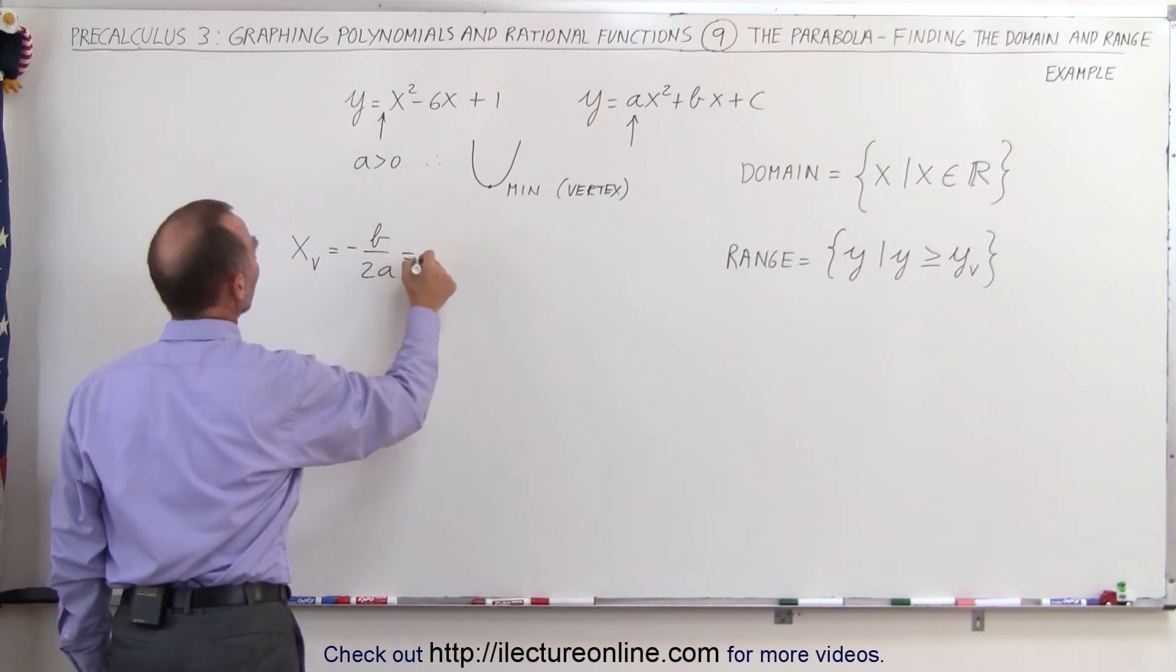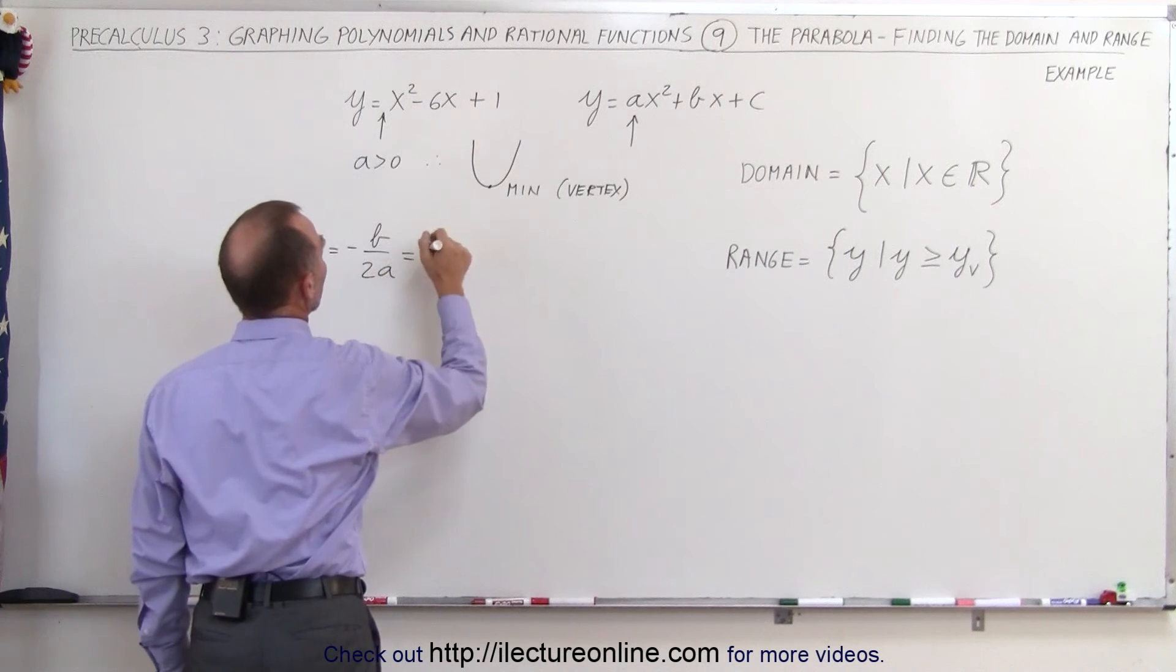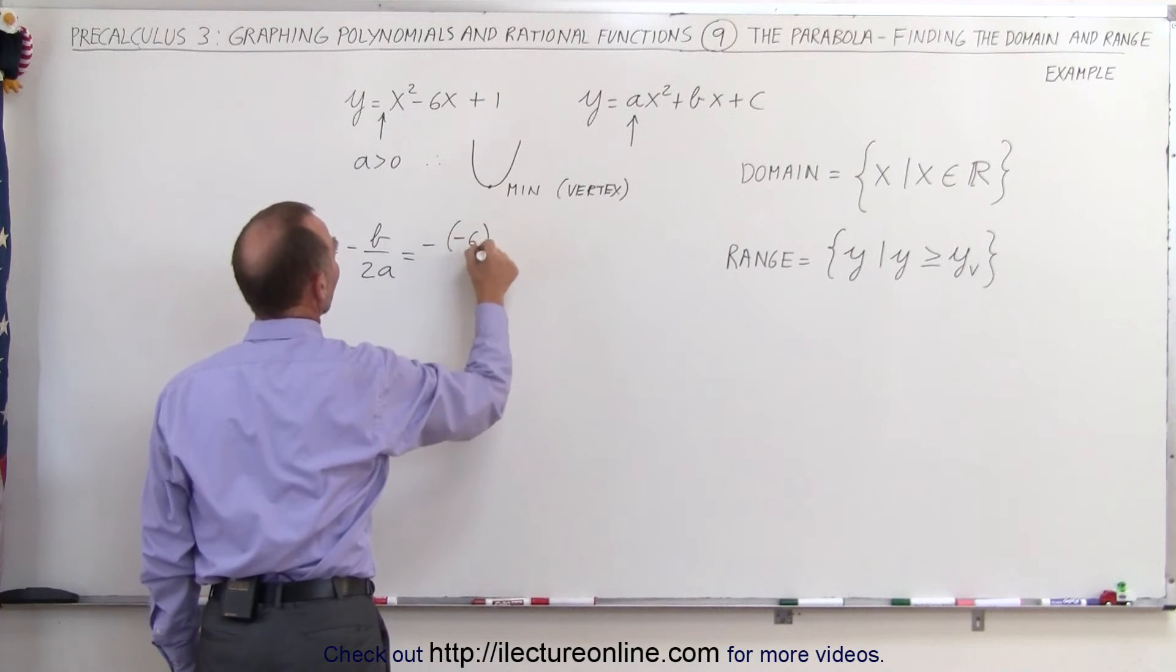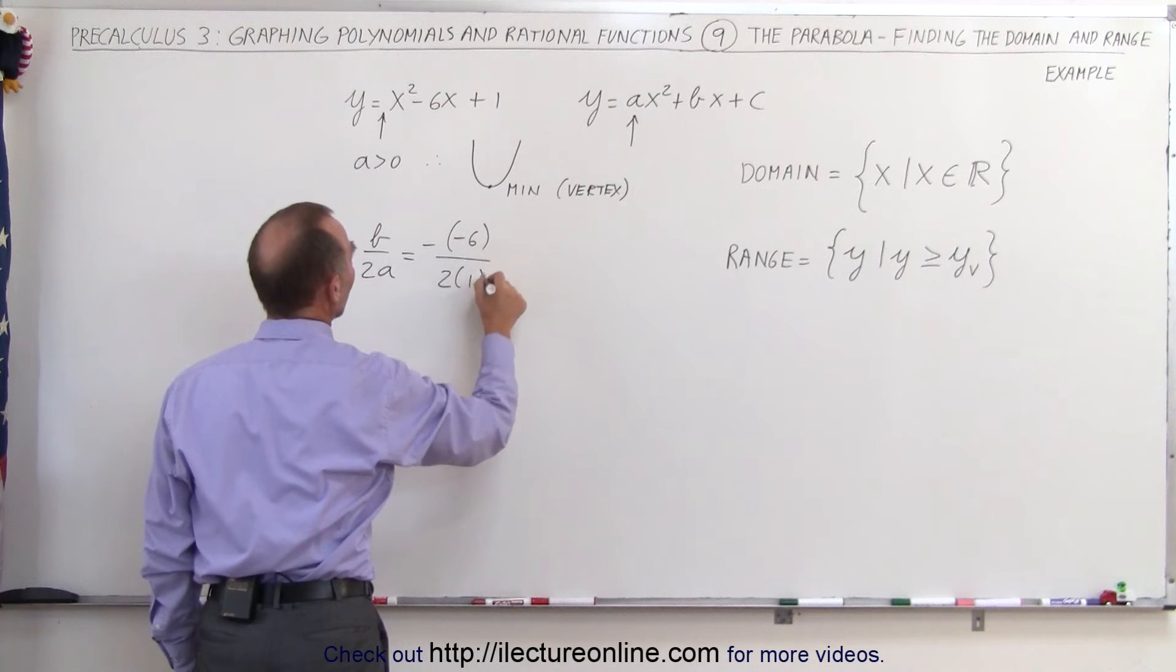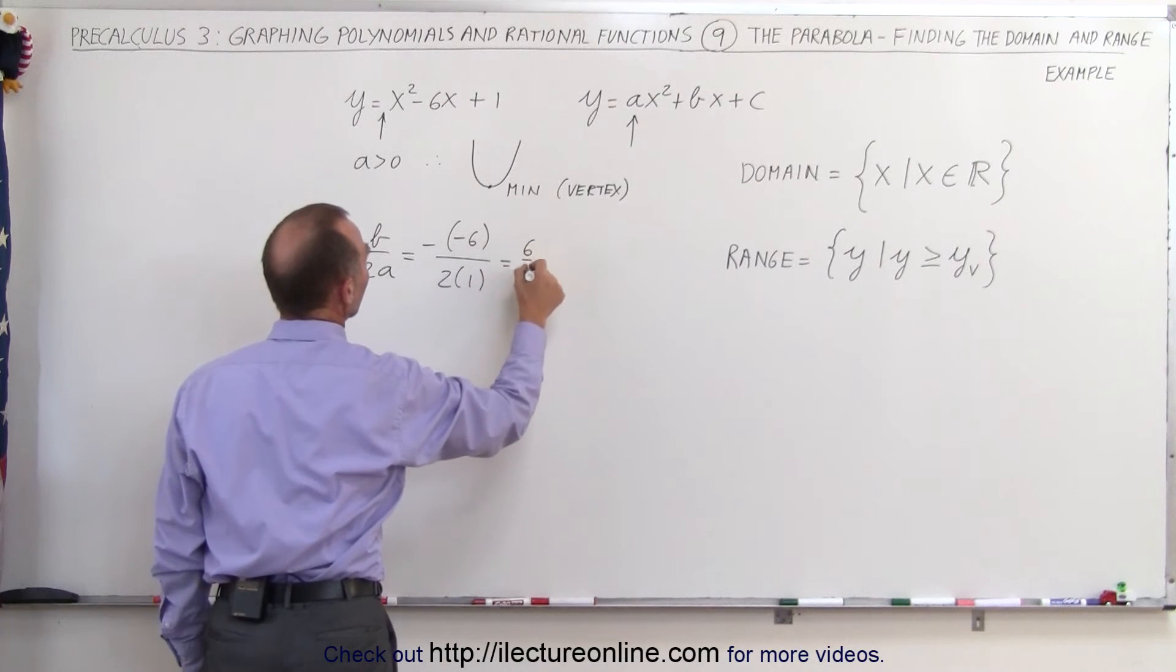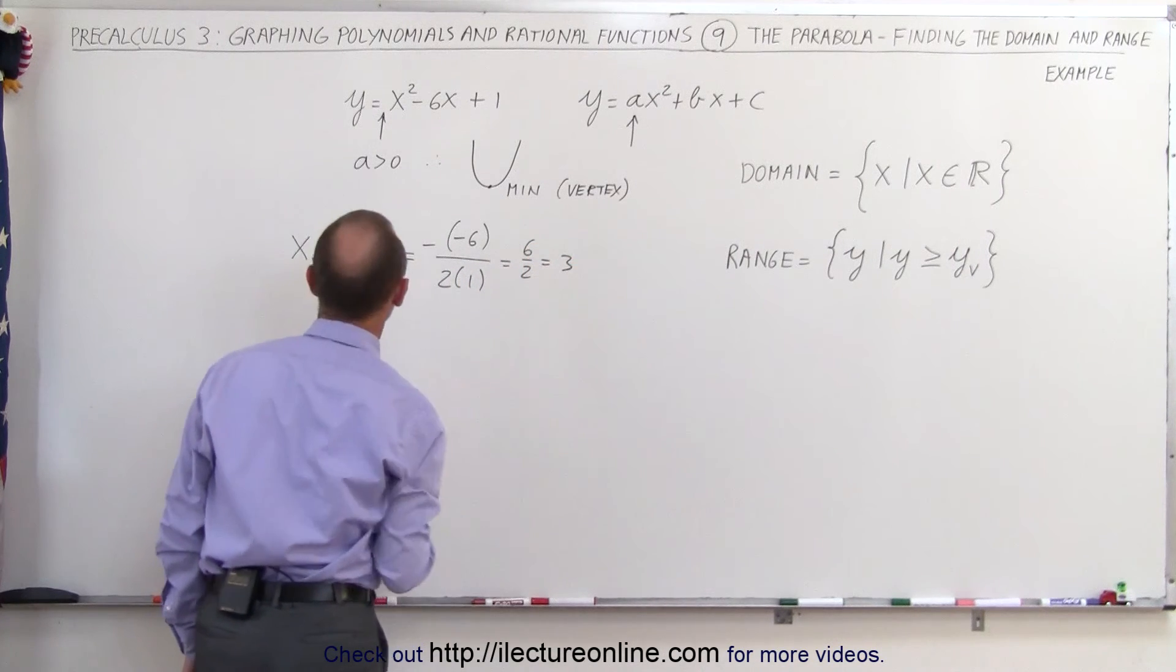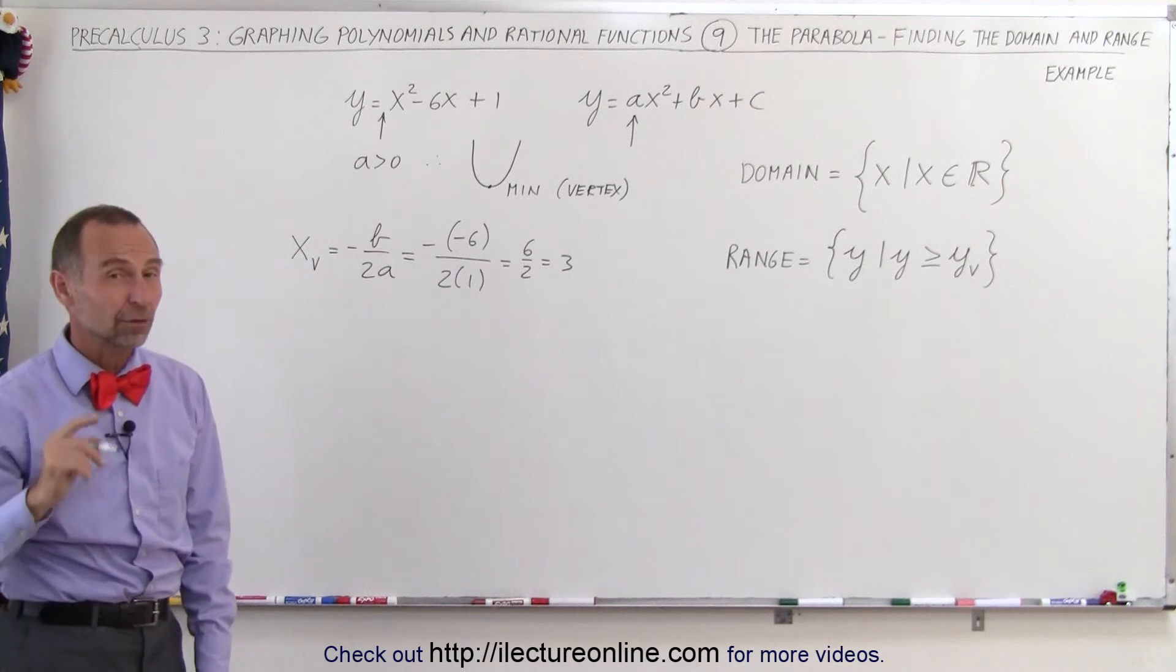In this case, b is -6, so that's -(-6) divided by 2 times 1, which is 6/2 or 3. The x-coordinate of the vertex is 3.